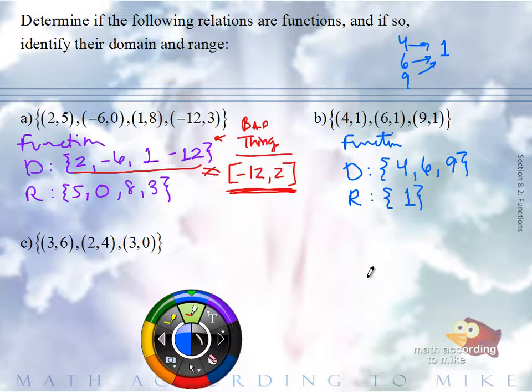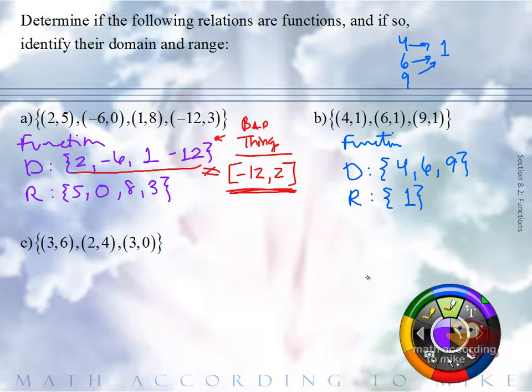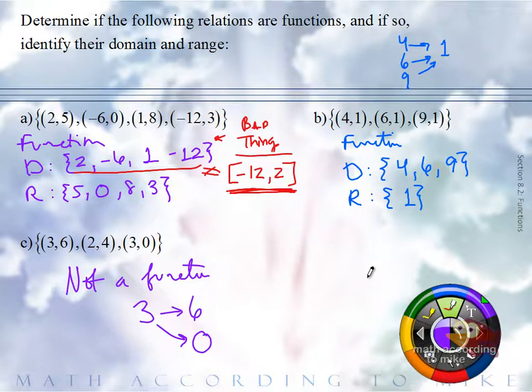How about Part C? Not a function. Why? Three goes to six and zero. That is not good.